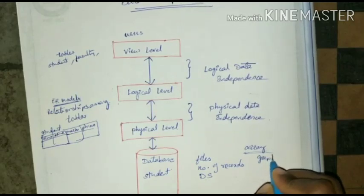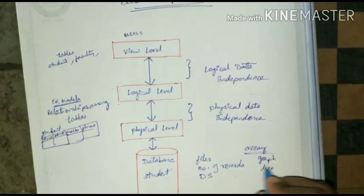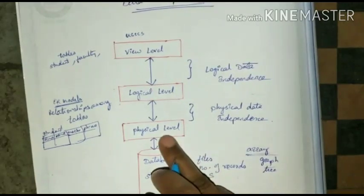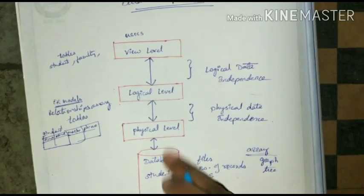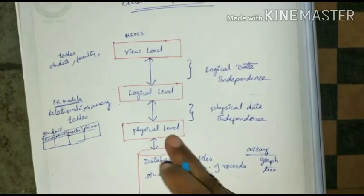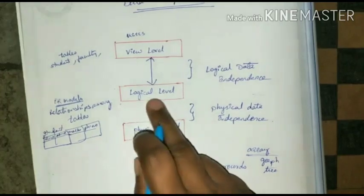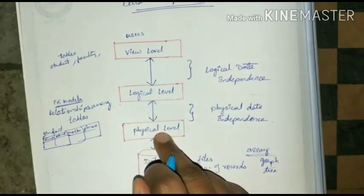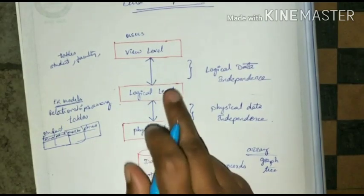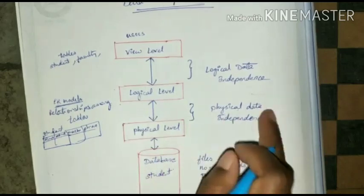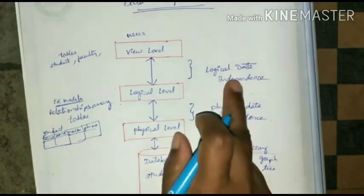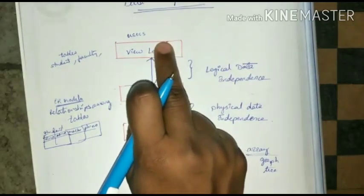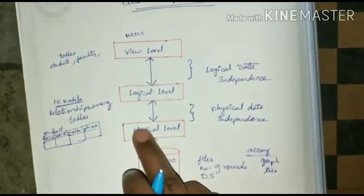If I am changing the data structure from one data structure to another — for example from an array to a graph or tree — that is a physical level change. How the database physically stores the data changes, but the logical level will be unaffected. This is called physical data independence.